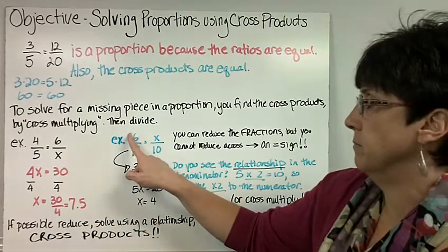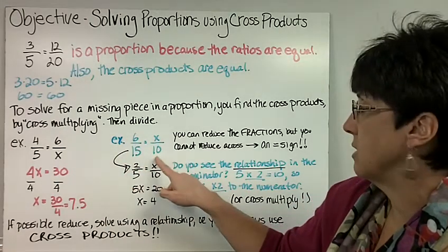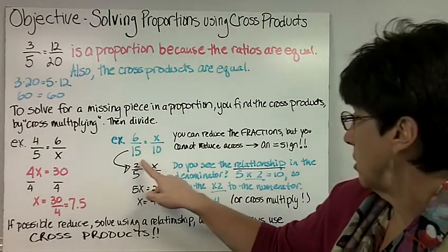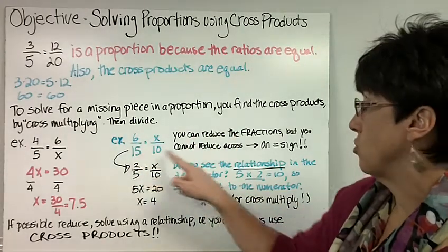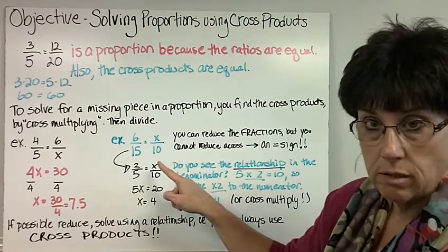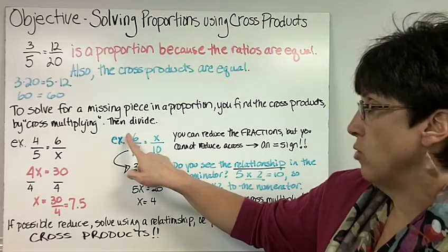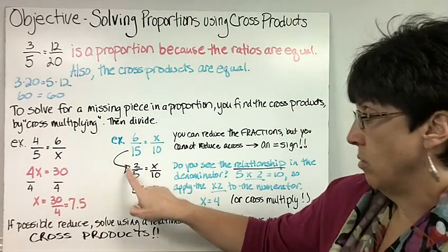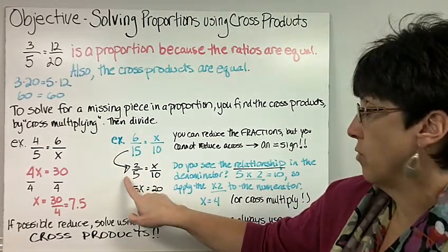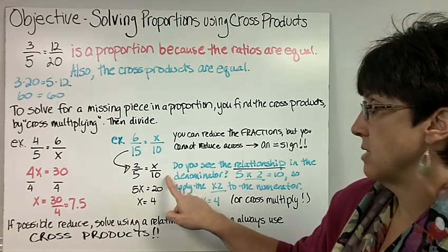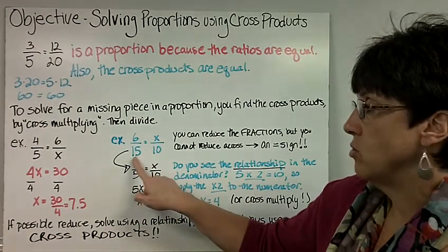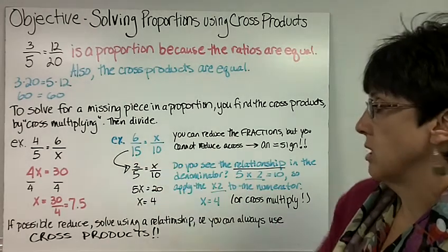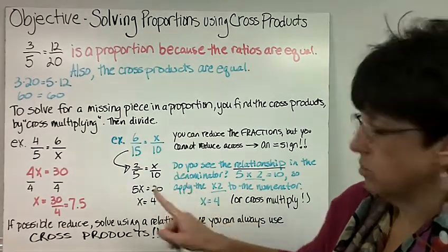Here's another one. 6 is to 15 as x is to 10. You can reduce the fraction, but you can't reduce going across an equal sign. So I'm going to reduce this 6 over 15. I'm going to divide each by 3 and get a new proportion and say 2 over 5. 2 is to 5 as x is to 10. You cannot reduce the 15 and the 10. We just cannot reduce across an equal sign.